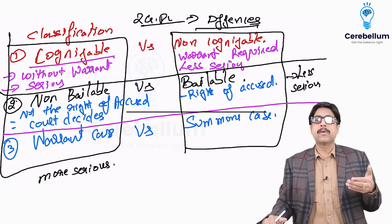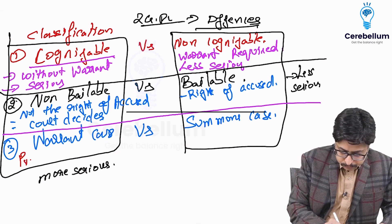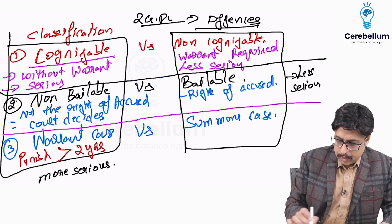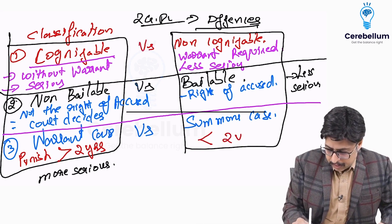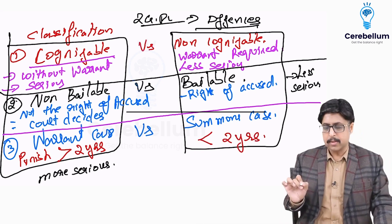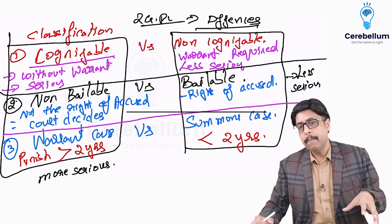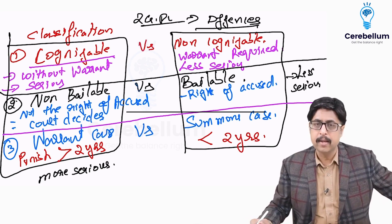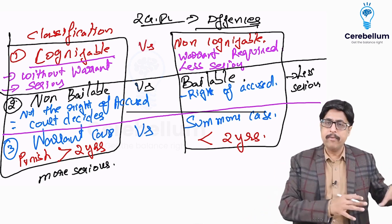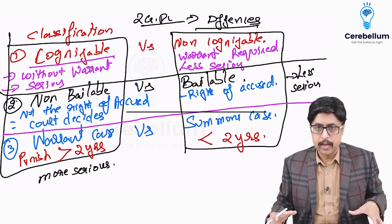Warrant case versus summons case: a warrant case is any case whose punishment is more than 2 years, and a summons case is any case whose punishment is less than 2 years. The reason for this classification is that the trial procedure in a warrant case is different from the trial procedure in a summons case.